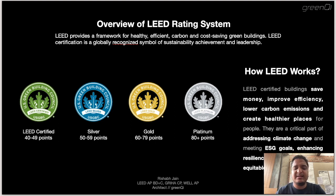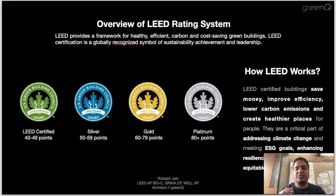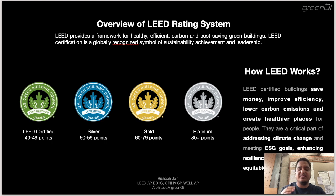While all LEED certified buildings achieve such goals, there are different tiers of rating. The lowest is LEED Certified, in which the building has to score above 40 points, and the highest is Platinum, in which the building has to score more than 80 points. For Silver the threshold is 50 points, and for Gold it is 60 points. Higher rating means better performance of the building.